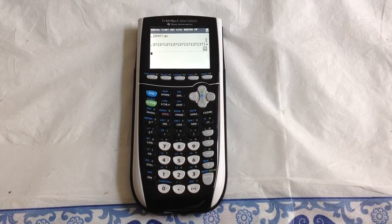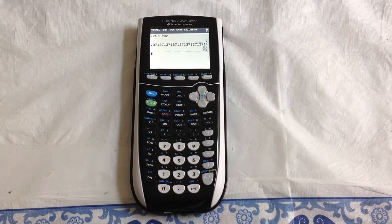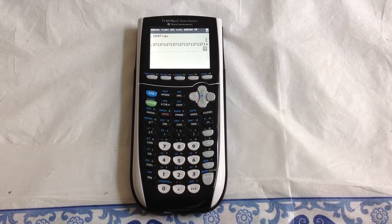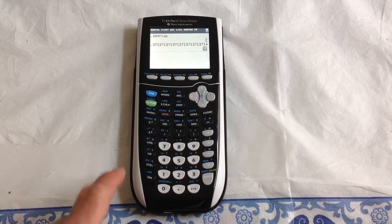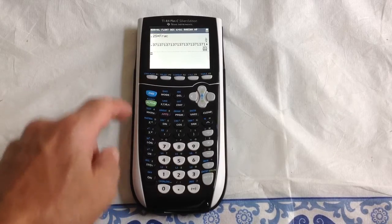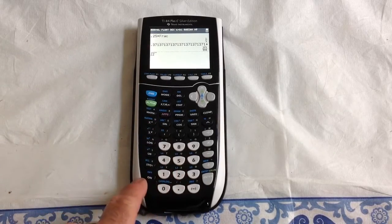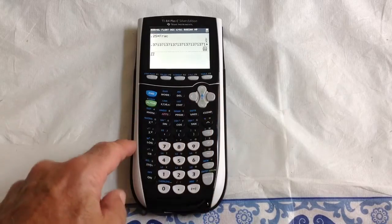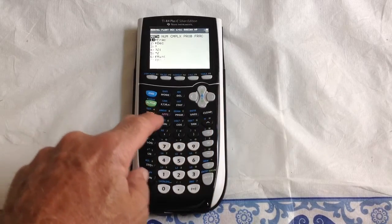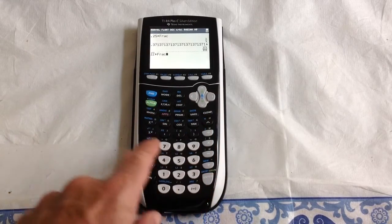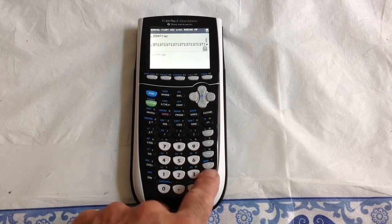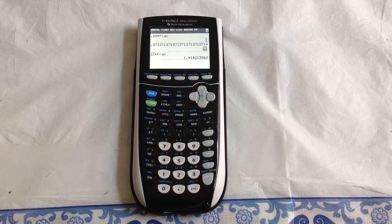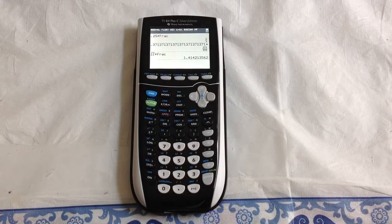That's how you change a decimal into a fraction. If it can't do it, it'll leave it as a decimal. For example, second square root of 2—you clear out of that and press math, make it into a fraction. Since that's irrational and you can't make it a fraction, the calculator can't do it either and will leave it as a decimal.